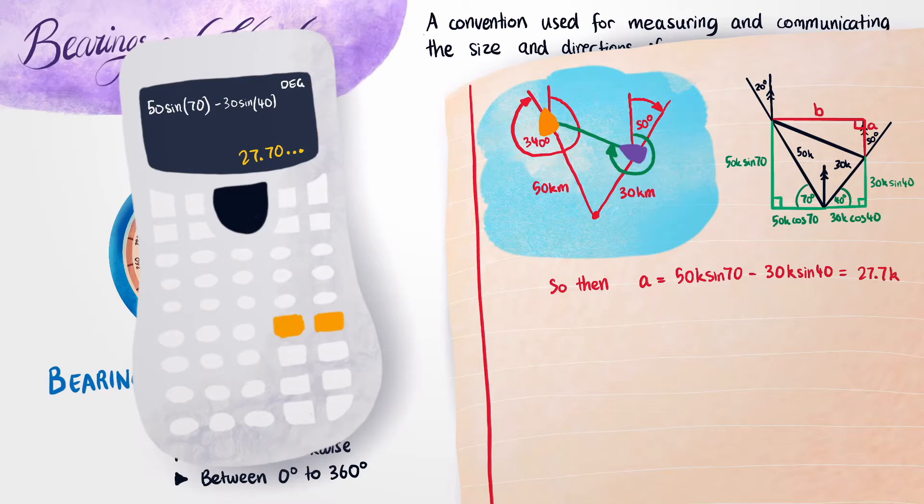Now using similar reasoning, we can immediately see that this length B over here is exactly the same as this length plus this length. Now that we have the sides of this triangle over here, we can actually go ahead and solve for the distance and the bearing. I'll first start by copying the triangle over.